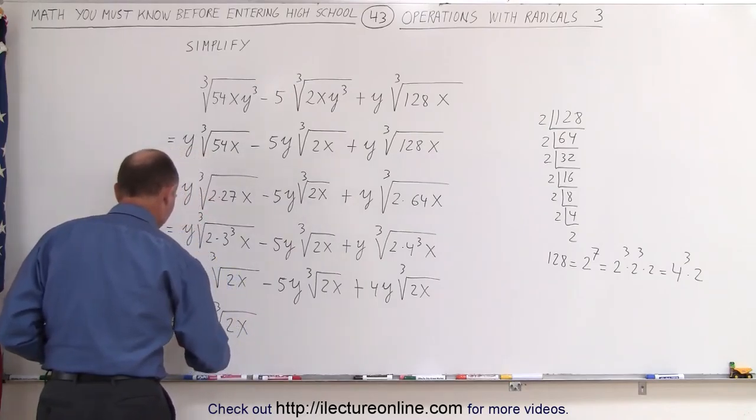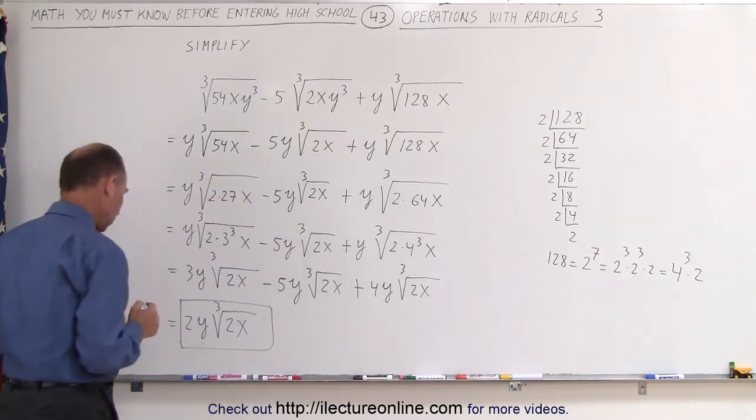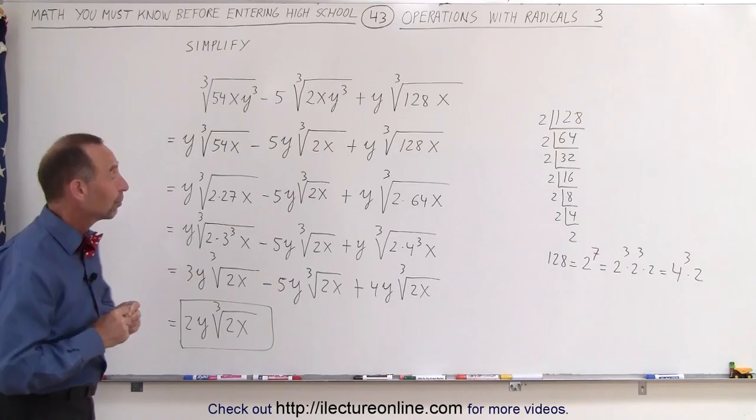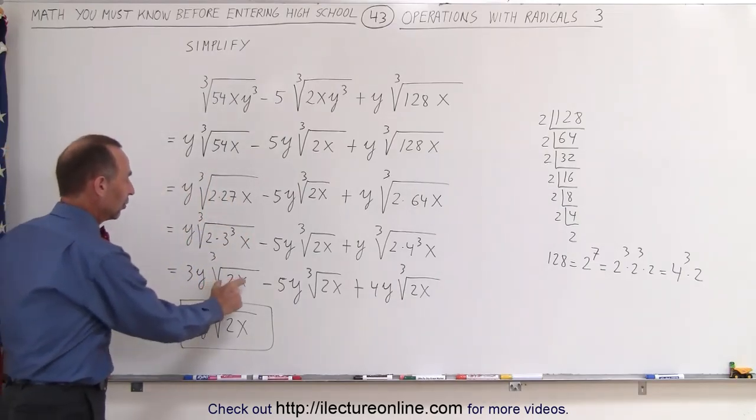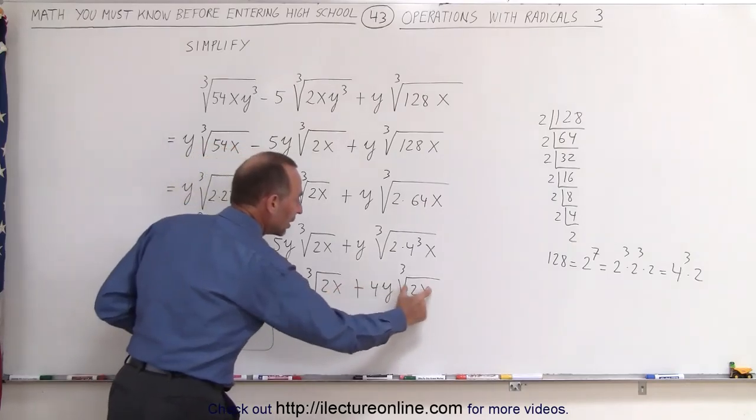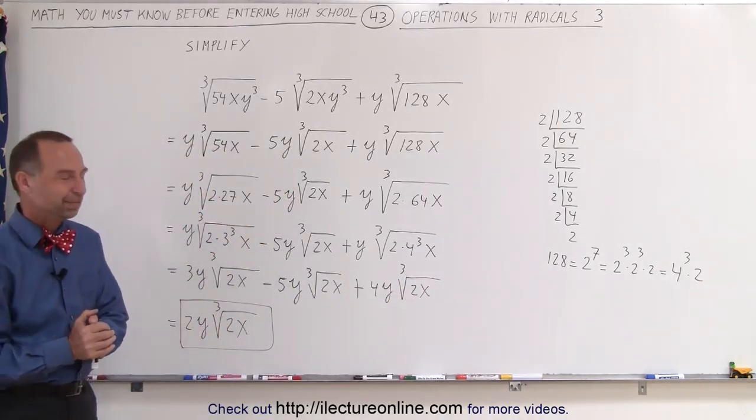which is the final correct form of our original radical expression. So you can see you combine radical expressions if the number or the part underneath the radical is exactly the same and that's how it's done.